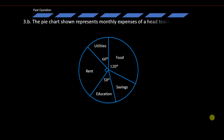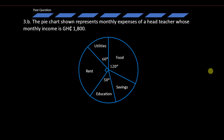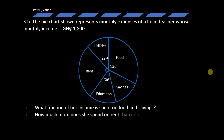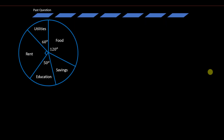The pie chart shown represents the monthly expenses of a teacher whose monthly income is 1,800 Ghana cedis. He spends his monthly income on utilities, food, savings, education, and rent. The questions are: what fraction of her income is spent on food and savings, and how much more does she spend on rent than education?